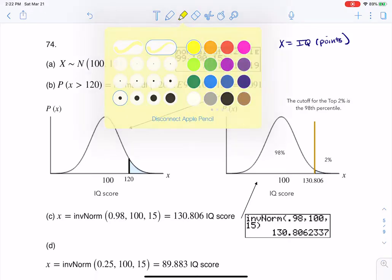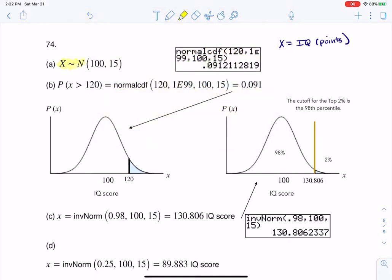There is my squiggles. So I know that I will be making the bell curve, and I will put 100 under the peak, and I can scale it by 15s. And so with that, that's the answer to A.